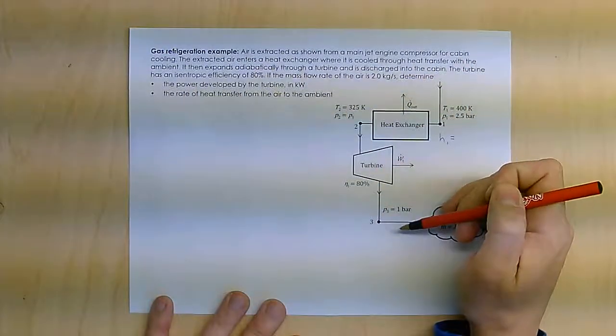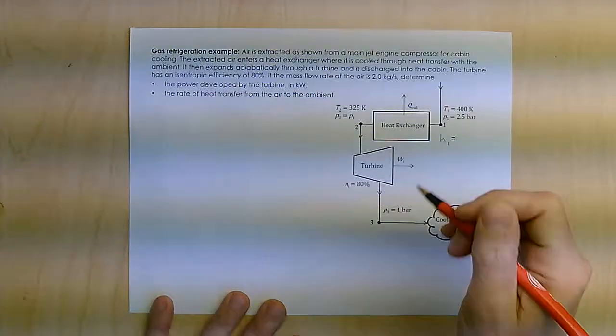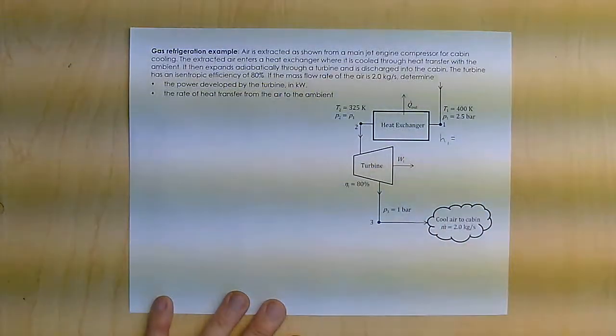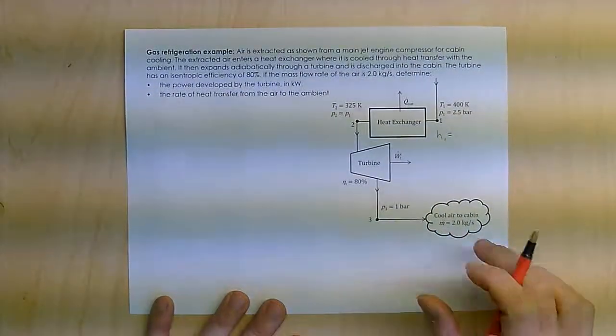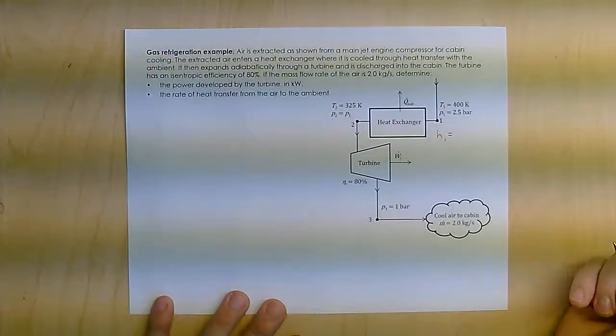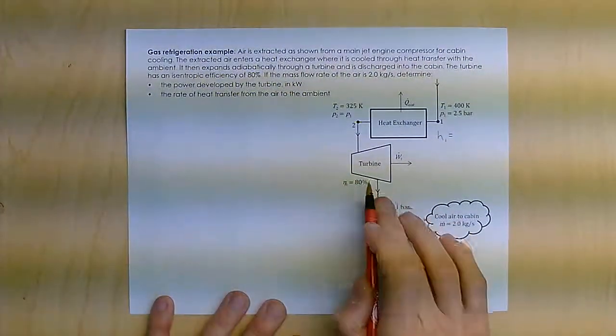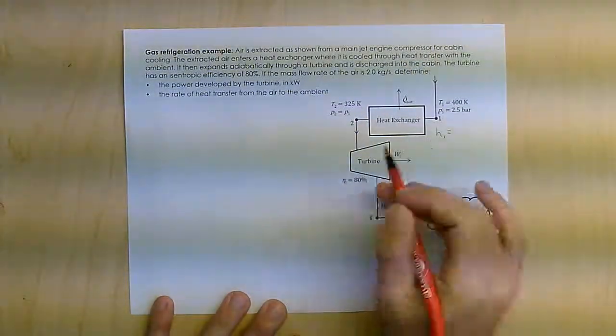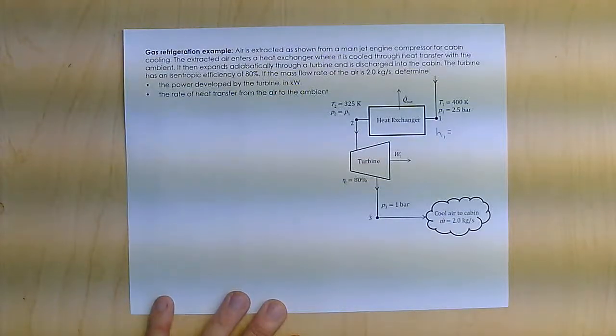And then it expands through a turbine at 80%, and then whatever's left over, it's cool air, it's dumped into the cabin at a rate of 2 kilograms per second. So what I want to figure out is how much work is the turbine producing, and then how much is the Q out, basically how much heat is dumped to the surrounding.